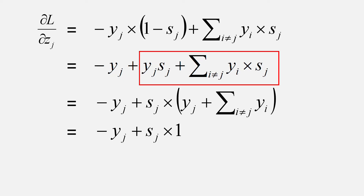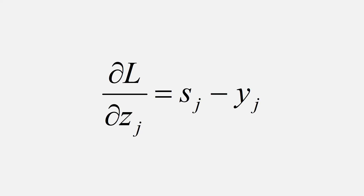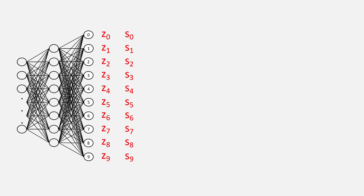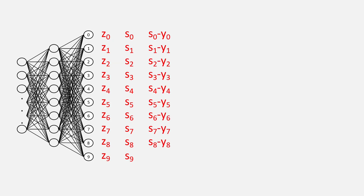We know that the summation of all the y's equals 1, as this is our true distribution. So at last we get s_j minus y_j. We can finally write: ∂L/∂z_j = s_j − y_j. This can be read as: the derivative of the loss function L with respect to any output of the neural network z_j. So for every output — for example z_0, the derivative of the loss will be s_0 minus y_0; for z_1, it will be s_1 minus y_1; for z_7, it will be s_7 minus y_7; and for z_9, it will be s_9 minus y_9.